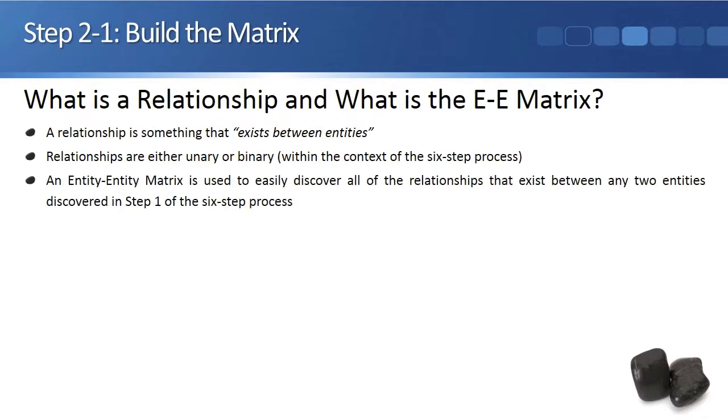An entity-entity matrix is used to easily discover all of the relationships that exist between any two entities discovered in step one of the six-step process.